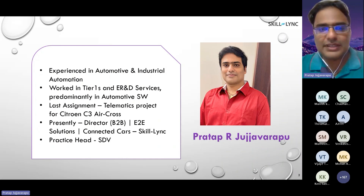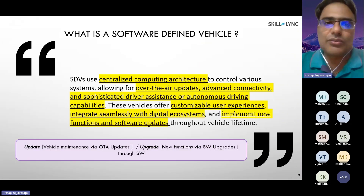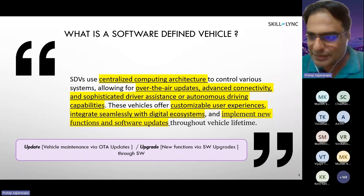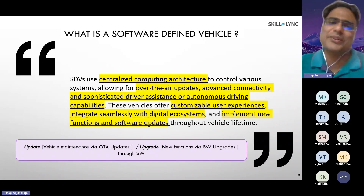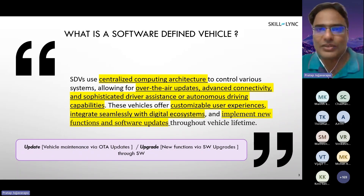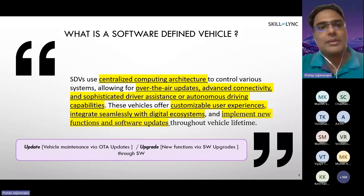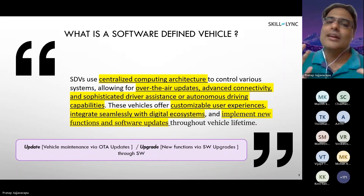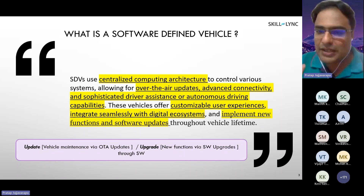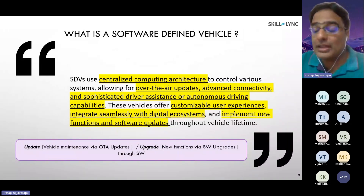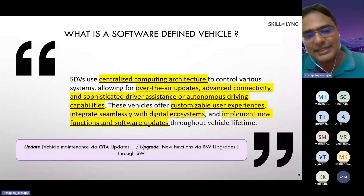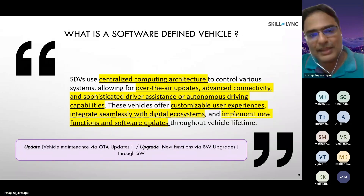Presently I am working as Director here in Skilllink for B2B, business-to-business enterprises, and I am also the practice head for SDV in Skilllink. So let us first discuss: what is a software-defined vehicle? If you check on the internet, or even use ChatGPT, you get a lot of definitions. If we amalgamate all these definitions and form one that actually makes sense, the implementation and meaning of software-defined vehicle is: the implementation of new functions and software updates throughout the vehicle lifetime. This is the actual definition of software-defined vehicle.